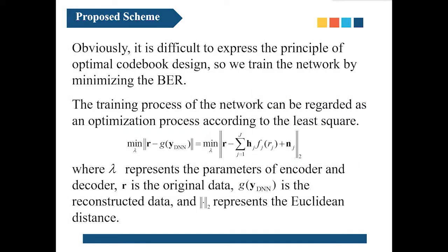Obviously, it is difficult to express the principle of optimal codebook design, so we train the network by minimizing the BER. The encoder and decoder are regarded as one network when training. We use randomly generated binary data stream as training set and test set. The training process of the network can be regarded as an optimization process according to the least square.